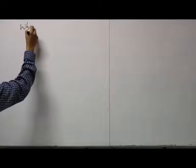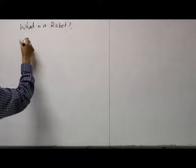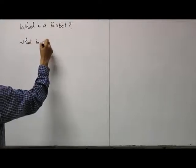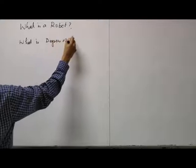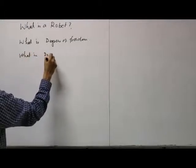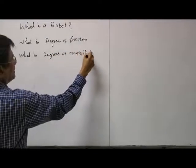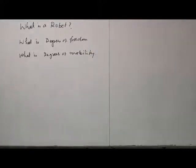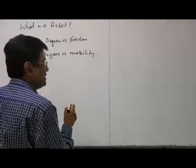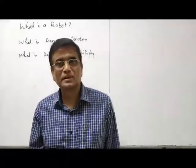The other day we discussed what is a robot, what is degrees of freedom, what is degrees of mobility. These are all concepts we clarified. We also told you that a robot is a serial kinematic chain. Mathematically, or from a mechanics point of view, the robot is a reprogrammable universal machine.